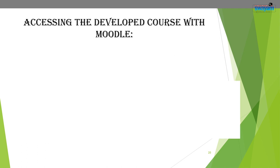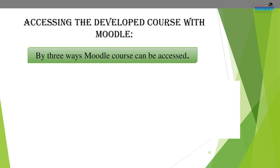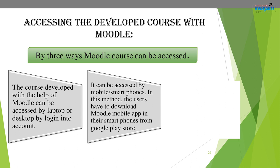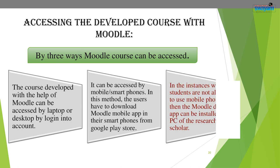Regarding accessing the developed Moodle course: the course can be accessed in three ways. It can be accessed by laptop or desktop by logging into the account. It can also be accessed by mobile or smartphones — users download the Moodle mobile app from the Google Play Store. In instances where students are not allowed to use mobile phones, the Moodle desktop app can be installed on a PC.